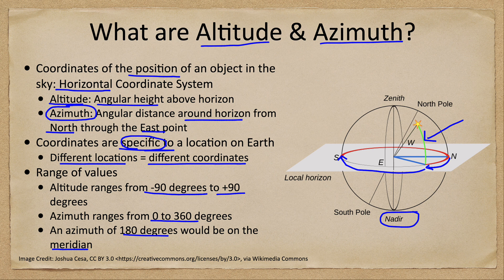Specifying these two coordinates can give you a precise location of an object on the sky, but remember it applies to a specific location and a specific time. It is not a permanent coordinate system, as it is constantly changing because the sky appears to rotate around the Earth due to the Earth's rotation on its axis.